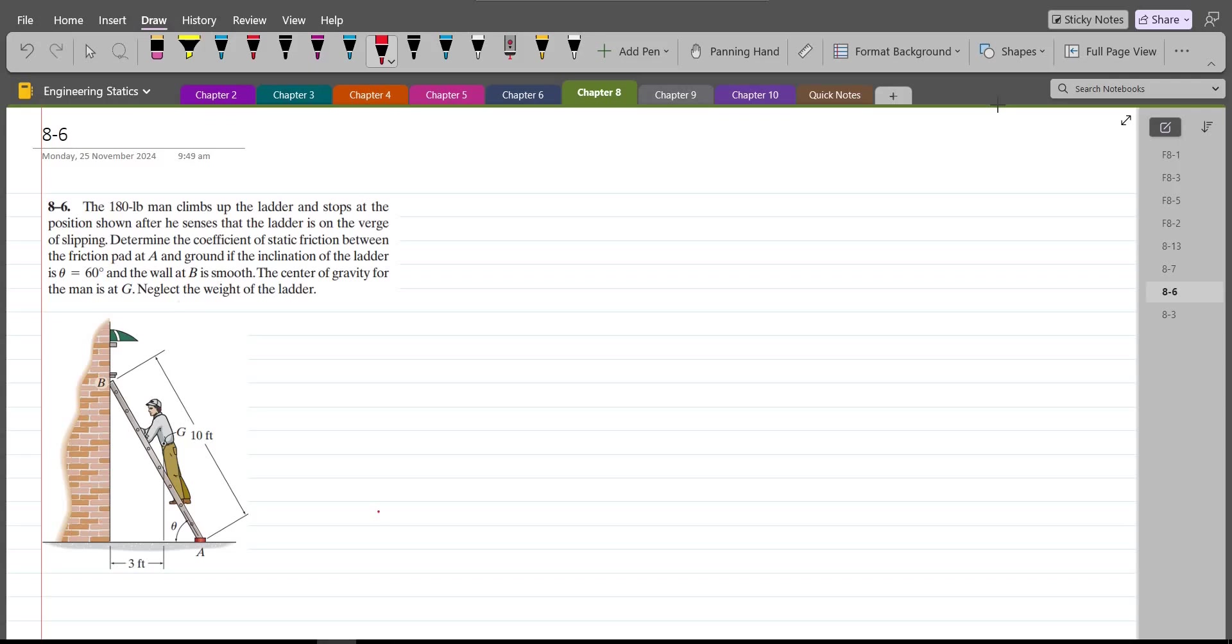Now to solve this problem, first of all, we have to draw all the support reactions and the known forces. Since the wall is smooth, I just have a normal reaction at point B and I have the weight of this man acting through the point G. Also, I have a normal force at point A and I have a frictional force as well at point A.